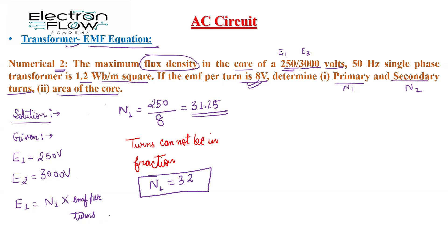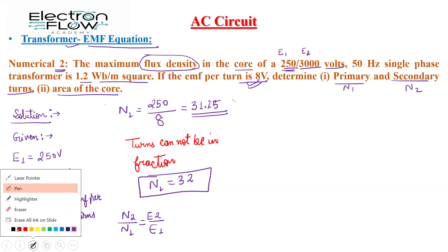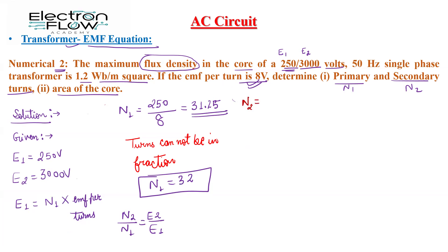We know that N2 divided by N1 is equal to E2 divided by E1. From here we can easily calculate N2. So N2 is equal to E2 divided by E1 into N1, which is 3000 divided by 250 into 32. So N2 is equal to 384 turns.